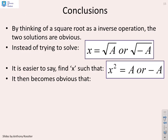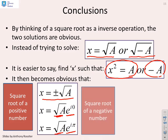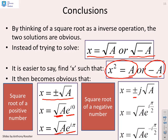In conclusion: by thinking of a square root as an inverse operation, the two solutions become obvious. Instead of solving x equals the square root of a or square root of minus a, it's easier to solve x squared equals a or x squared equals minus a. For the square root of a positive number, x equals plus or minus root a — in exponential form, modulus root a with phases zero or pi. For the square root of a negative number, x equals plus or minus i root a — in exponential form, modulus root a with phases pi by two or minus pi by two.